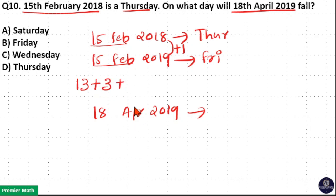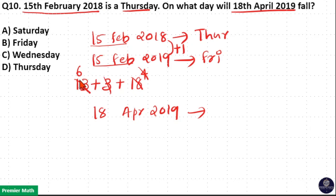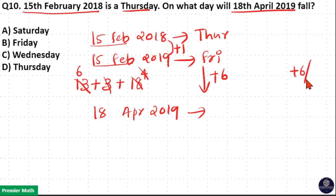After March it is April, only up to 18 days. In 13 days there are 6 odd days, and in 18 days there are 4 odd days. So 6 plus 4 plus 3 gives 13 odd days total — that is 6 odd days between 15th February 2019 and 18th April 2019. Friday plus 6, or Friday minus 1, gives you Thursday.